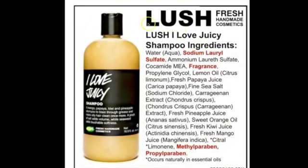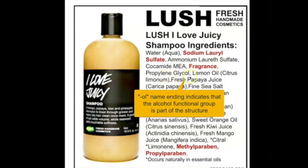Here's another shampoo. Again, you can focus on the ingredients and try to understand what's in there. So there's water, and then again that sodium lauryl sulfate. There's also ammonium lauryl sulfate — ammonium is on the polyatomic ions list, and sulfate is also on the polyatomic ions list. In the fragrances, this one is propylene glycol. Because of the -OL name ending, that means that there's an alcohol functional group. You might also recognize the prop- prefix, which means there are three carbons in there.